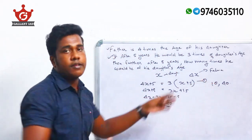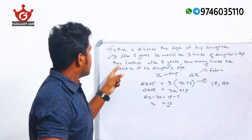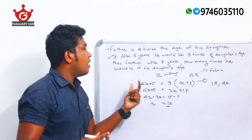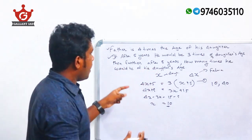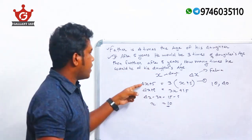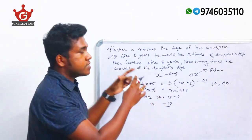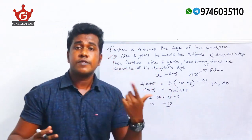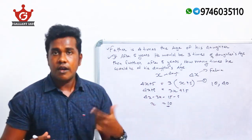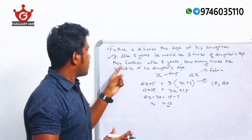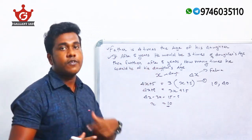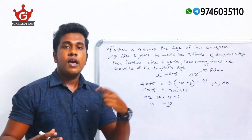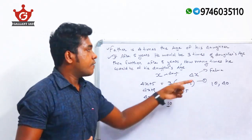The daughter's age is 10 years and the father's age is 40 years. The question then asks: further after five more years, how many times will he be of his daughter's age? That means we need the relationship after five more years beyond the first five — so 10 years from the present.